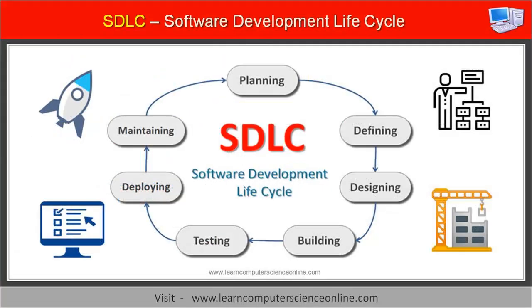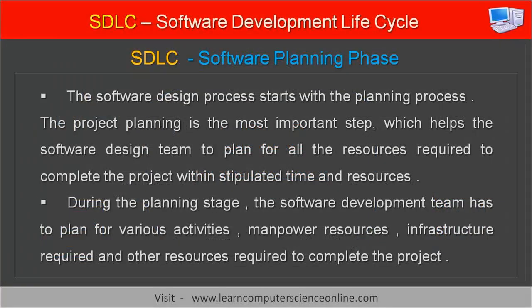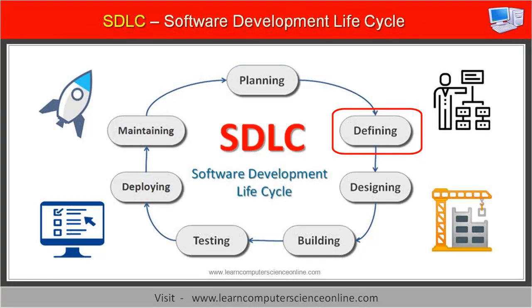The software design process starts with the planning phase. The planning process is the most important step, which helps the software design team to plan for all the resources required to complete the project within stipulated time and budget. During the planning stage, the software development team has to plan for various activities, manpower resources, infrastructure, and other resources required to complete the project.